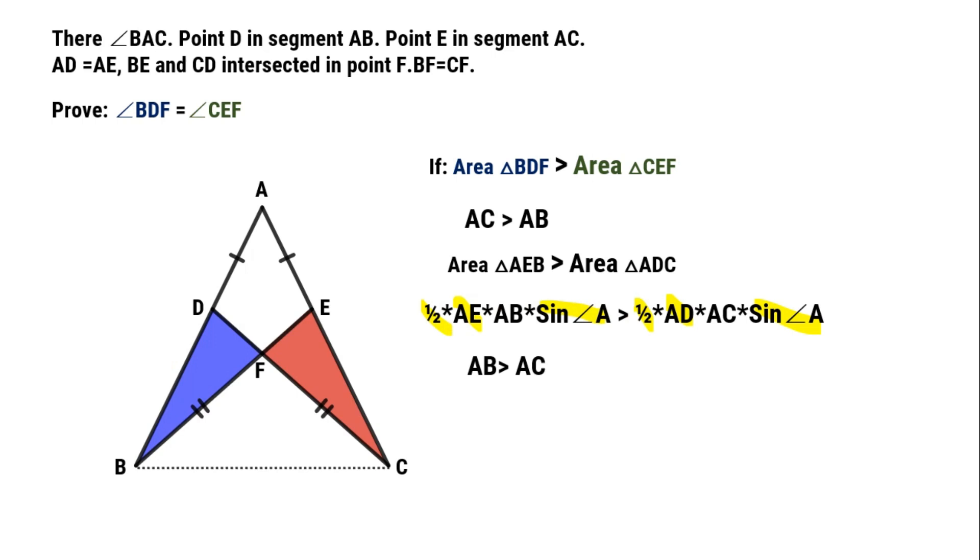By logics, AB is impossible larger and smaller than AC at same time. So area of triangle BDF, greater than triangle CEF, is not true.